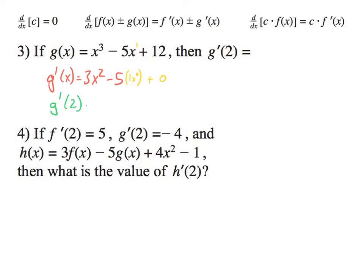We're plugging 2 in right there for all the x's. When I do that I get 3 times 2², so 2² is 4. When I simplify that I get 12 minus 5, which ends up being 7. So my answer here is 7.